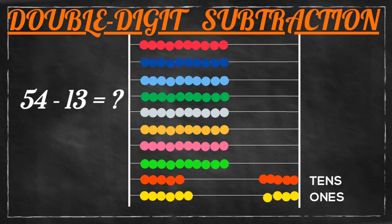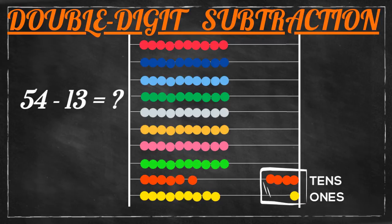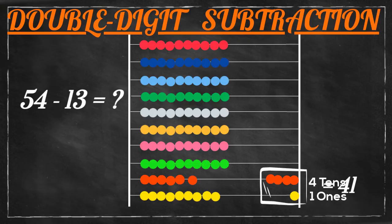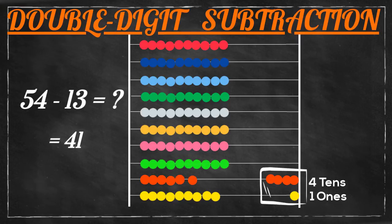Move three beads from the ones place and move one bead from the tens place. At the tens place four beads are left, and at the ones place one bead is left. Our answer is four tens and one one — that's 41.